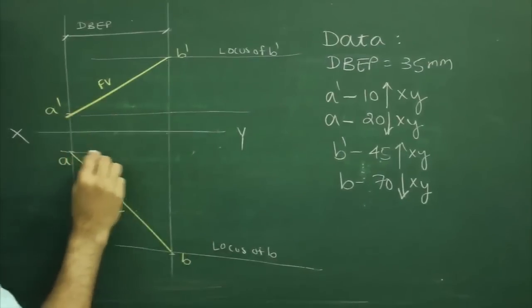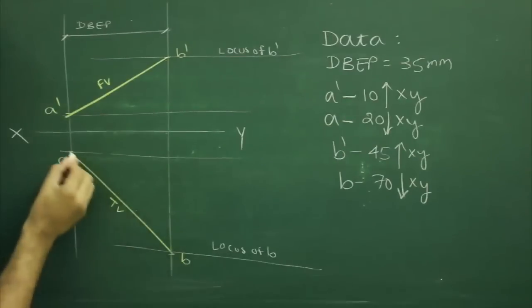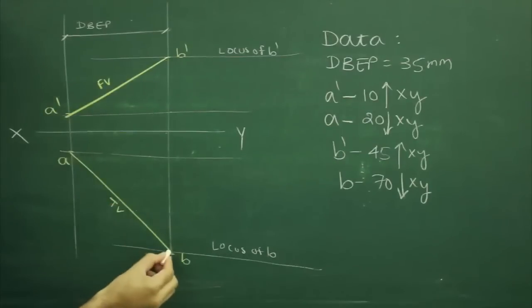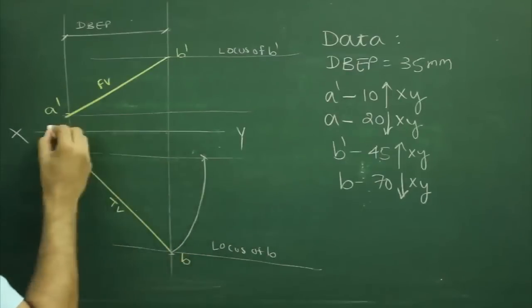We will draw horizontal line from A' and A as well. Now to find out true length, we will rotate AB keeping point A fixed. We will rotate top view in such a fashion that it becomes parallel to X-Y plane.